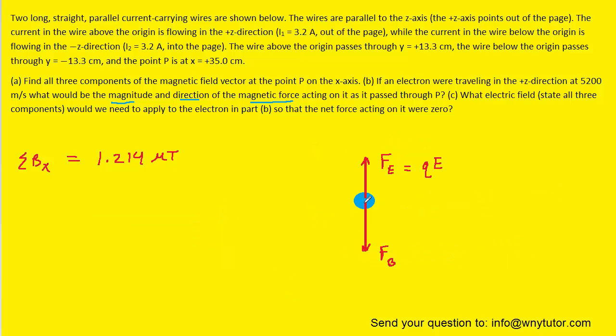For part C, we need the net force to equal zero. That means the downward magnetic force must be canceled by the upward electric force. So we could set the magnitude of the electric force equal to the magnitude of the magnetic force.